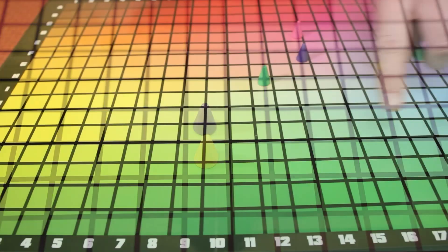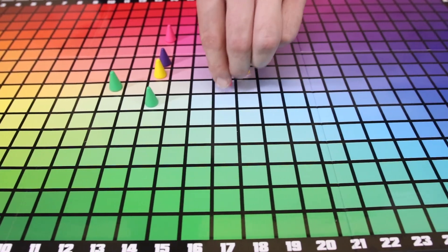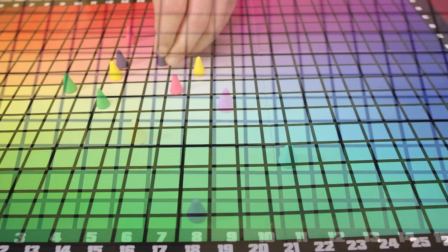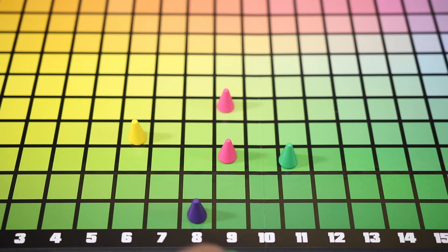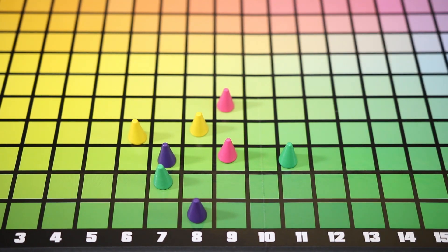The cue giver can now choose to give a second clue, which can be one or two words, or they can proceed to scoring. If a second cue is given, they may use a two-word clue to further clarify the color they are pointing toward, and players will then go in reverse turn order placing their second piece. Players then proceed to scoring.